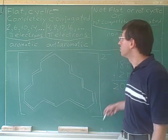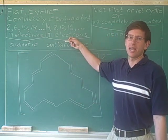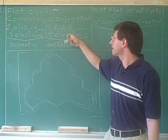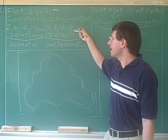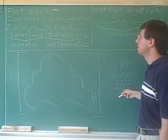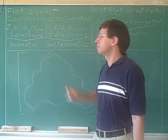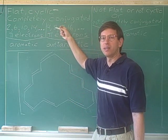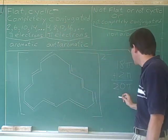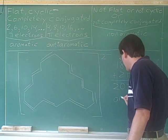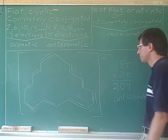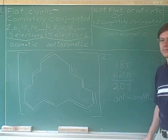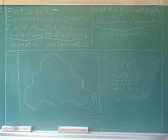20 pi electrons puts this molecule into the anti-aromatic category. We know that 16 is anti-aromatic, and adding four more gives the next element in the list: 20. Remember, the way to find the next element in each of these lists is to take the previous element and add four. So 20 pi electrons makes the molecule anti-aromatic.